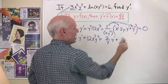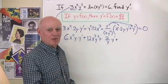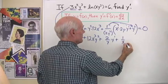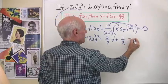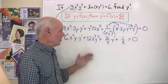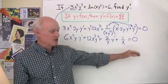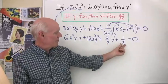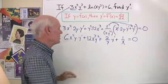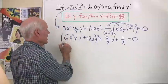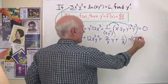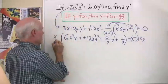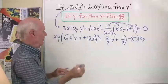...times y squared, so the y squareds divide out and I'll have just 1 over x. That equals 0. Now I start simplification — it looks like I have fractions here. Let's multiply both sides by xy to get rid of the fractions.